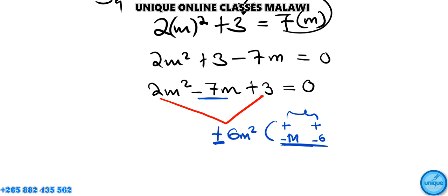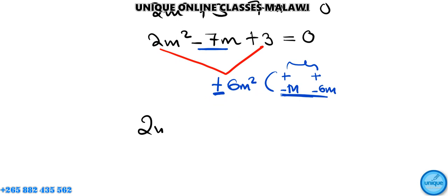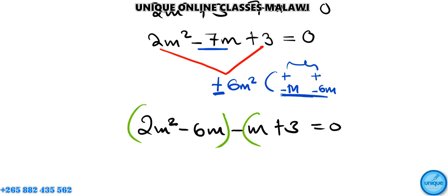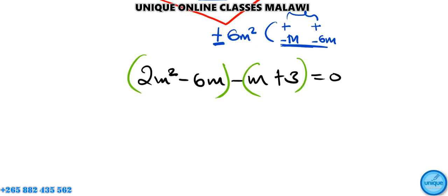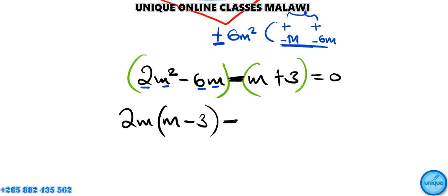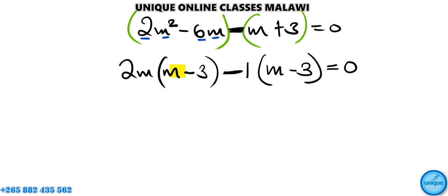We replace negative 7m with the factors: 2m squared minus 6m minus m plus 3 equals zero. Next, we group the terms. In the first bracket, the common factor is 2m, giving 2m(m minus 3). In the second bracket, the common factor is 1, giving minus 1(m minus 3), so the equation becomes (m minus 3)(2m minus 1) equals zero.